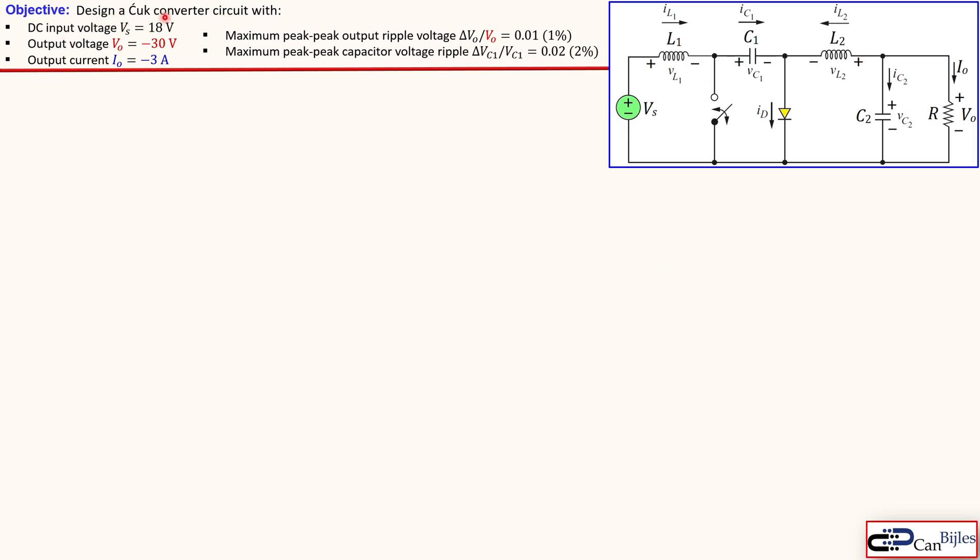So we would like to design this circuit so that this DC input is 18 volts. Output voltage will be minus 30, so again an inversion but this time it will be step up, and we need to have an output current of minus 3 amps. The maximum peak-to-peak output ripple is allowed to be one percent of the output voltage itself, and the maximum peak-to-peak capacitor voltage ripple for the capacitor C1 is allowed to be two percent.